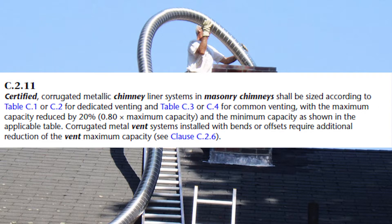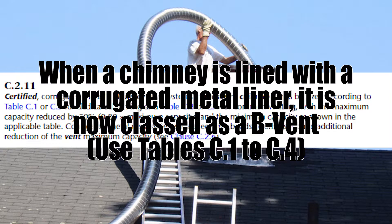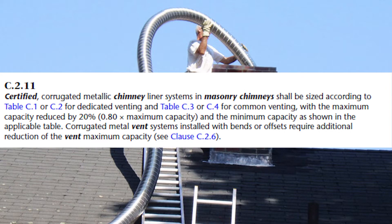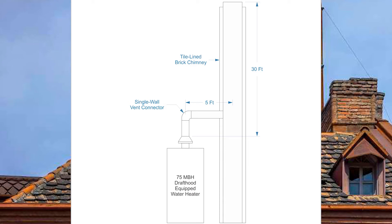GVRC 2.11 discusses the use of the metallic liner and all the rules around it. As soon as I put a liner down a brick chimney, it is now treated as a b-vent, meaning I'll use tables C1 through C4 and no longer the chimney tables. This also tells us we'll need to derate our table values because of the restrictive nature of corrugated pipe. Since I still have a single wall vent connector with a double wall vent, I need to use table C2.